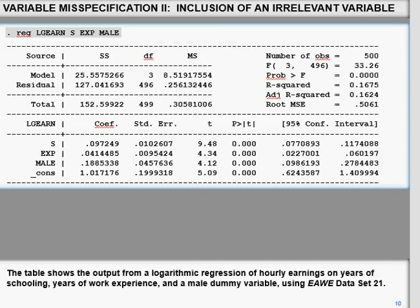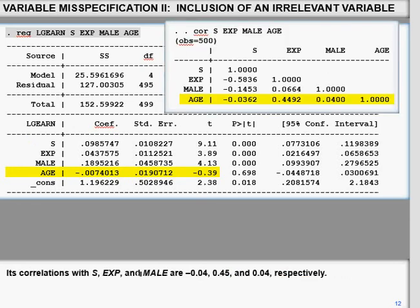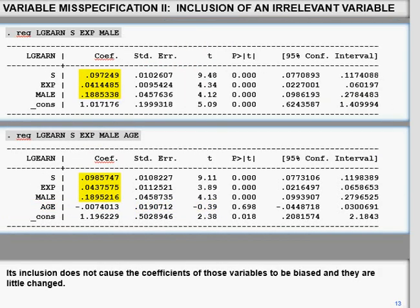We demonstrate this by regressing log of earnings on s, experience, and age, where age is considered an irrelevant variable. Its coefficient is minus 0.007, and the correlation between s and age is minus 0.03. When age is included, the standard errors become 0.010 and 0.0108 — slightly larger than without age. This confirms that including an irrelevant variable inflates standard errors.